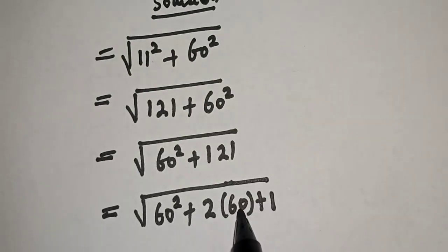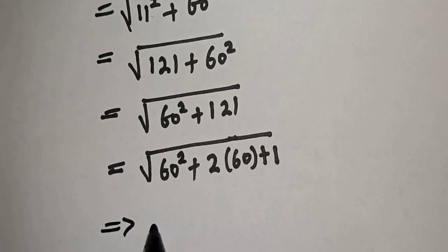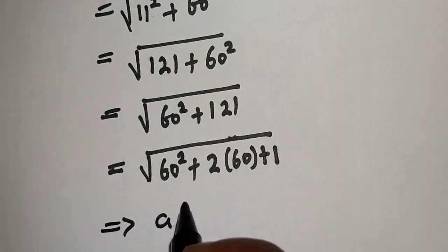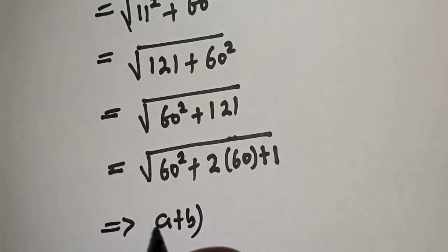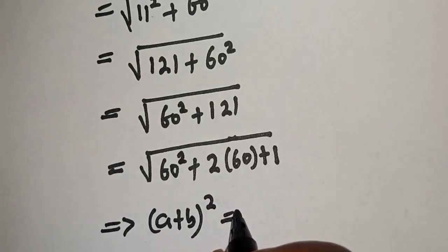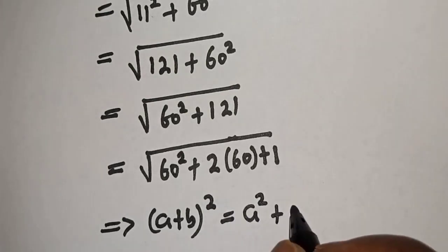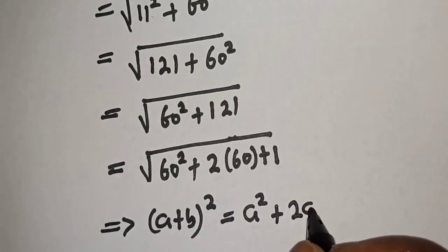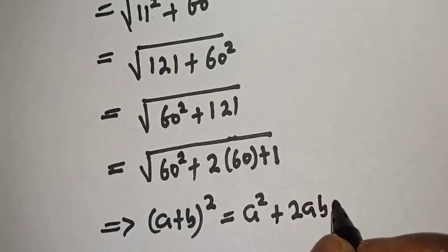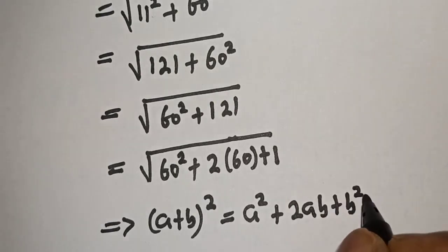Recall the identity: if you have (a + b) squared, this is equal to a squared plus 2ab plus b squared.